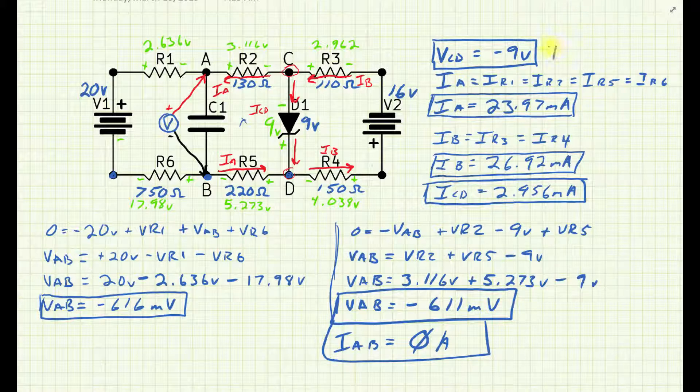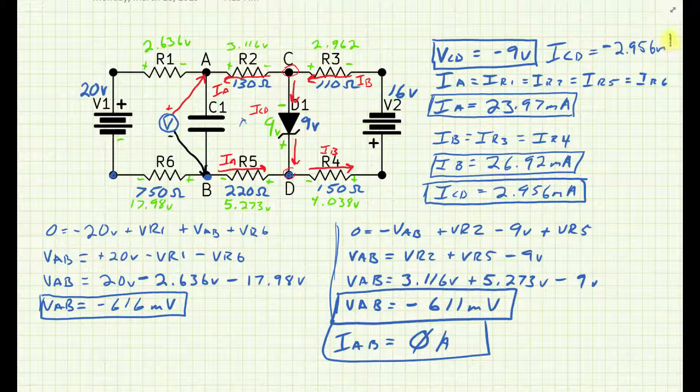Well, ICD is going to be this value here. But if I put my red lead on C and my black lead on the anode, so I opened up this path here between C and D1. I open that up and put my red lead on C and my black lead on the anode of that diode. Well, current will be flowing from the more negative side towards the positive side. While my red lead would be on the C, on the more negative side, so that current would be indicated as a minus 2.956 milliamps on my meter.